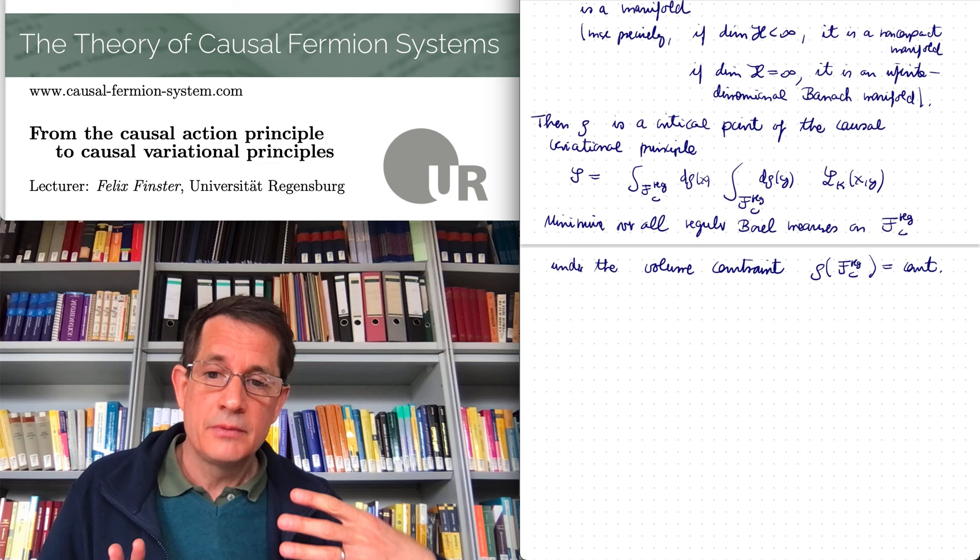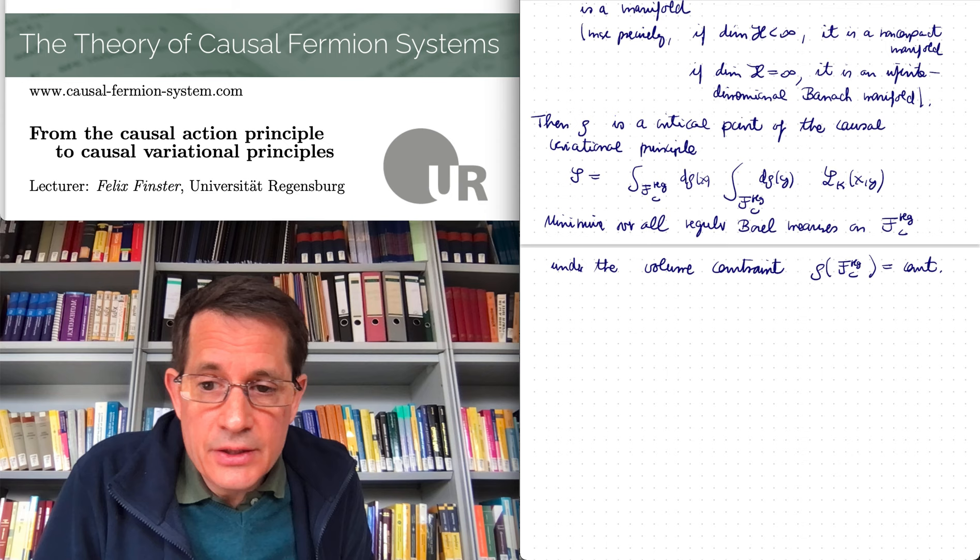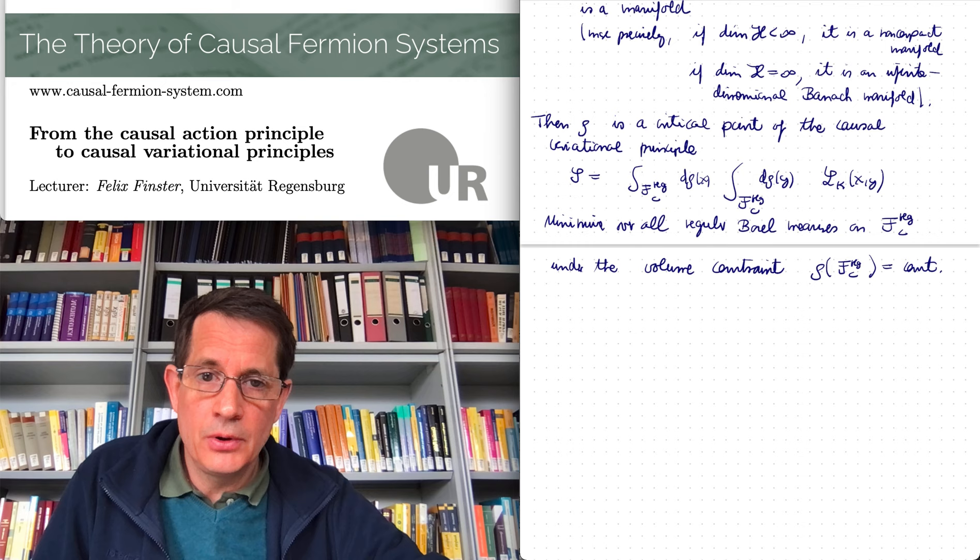So this is it. In this way we have a suitable, sufficiently large class of minimizers. One can also view them as critical points of a causal variational principle.